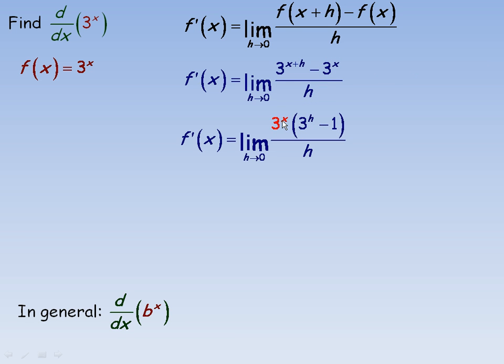Now, that 3 to the x can not only be factored over the numerator, it can actually be removed completely from the limit. So factored over the limit, because again, it's h that's tending towards 0, not x. So we're going to factor the 3 to the x right over the limit. And so we have 3 to the x, the derivative is 3 to the x times this limit.